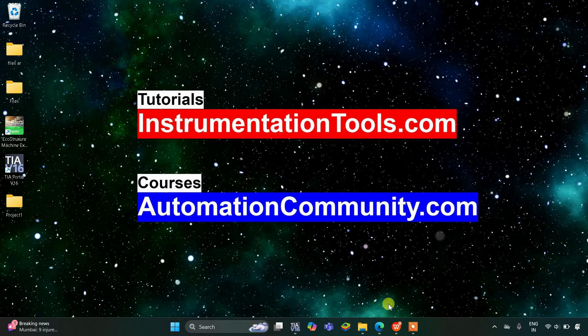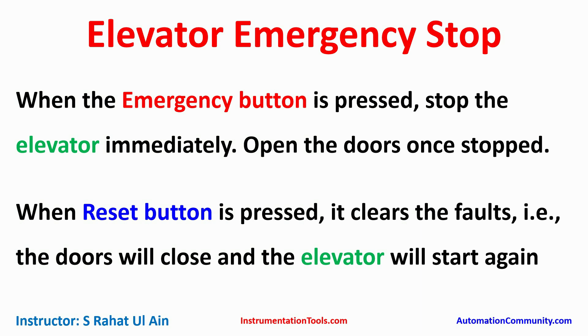Hello everyone, welcome to Automation Community. Today in this video we are going to discuss an example about elevator control. The example is: elevator emergency stop — when the emergency button is pressed, stop the elevator immediately and open the doors once stopped.